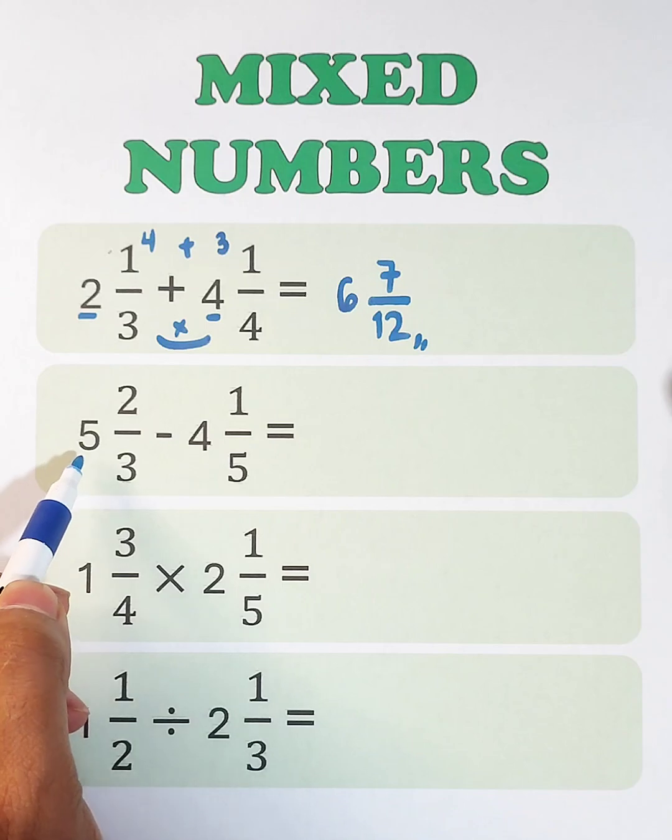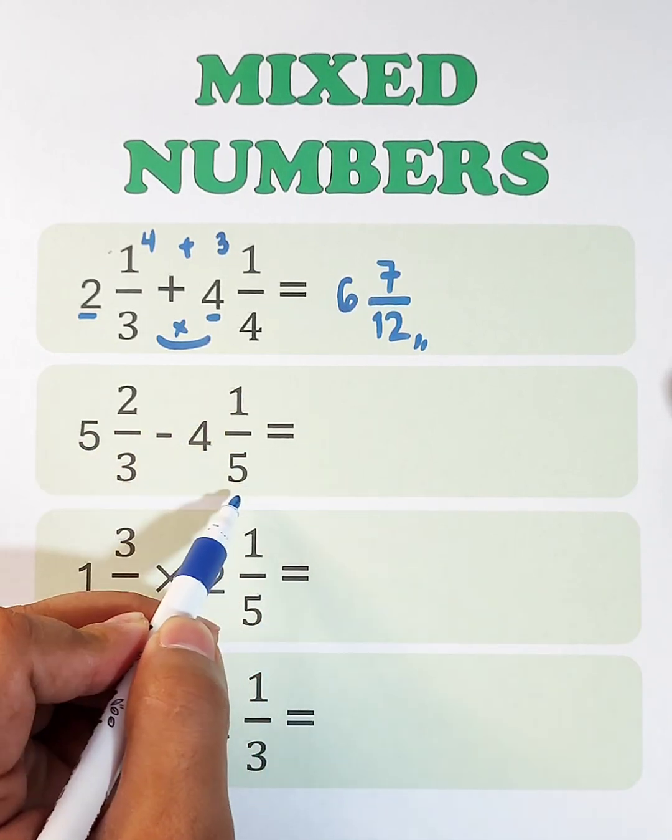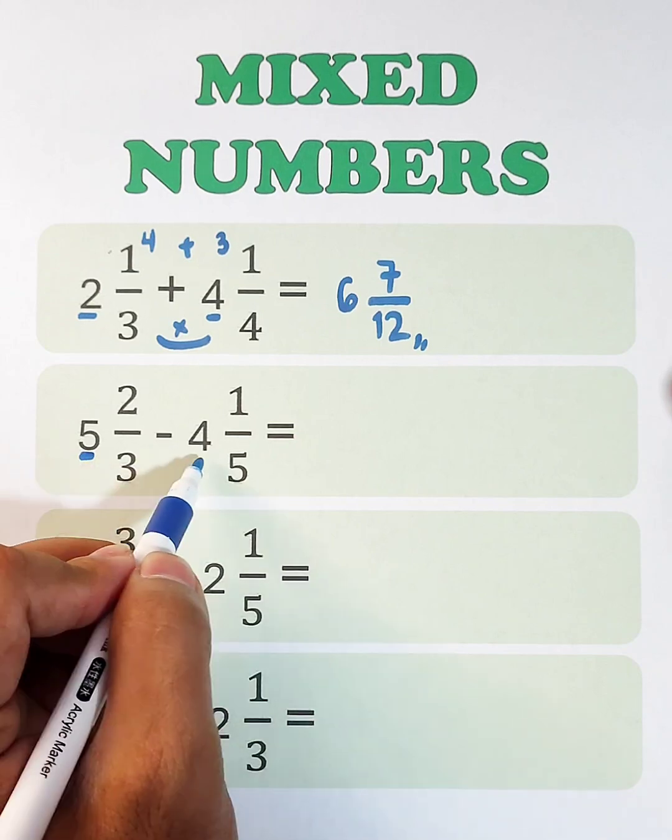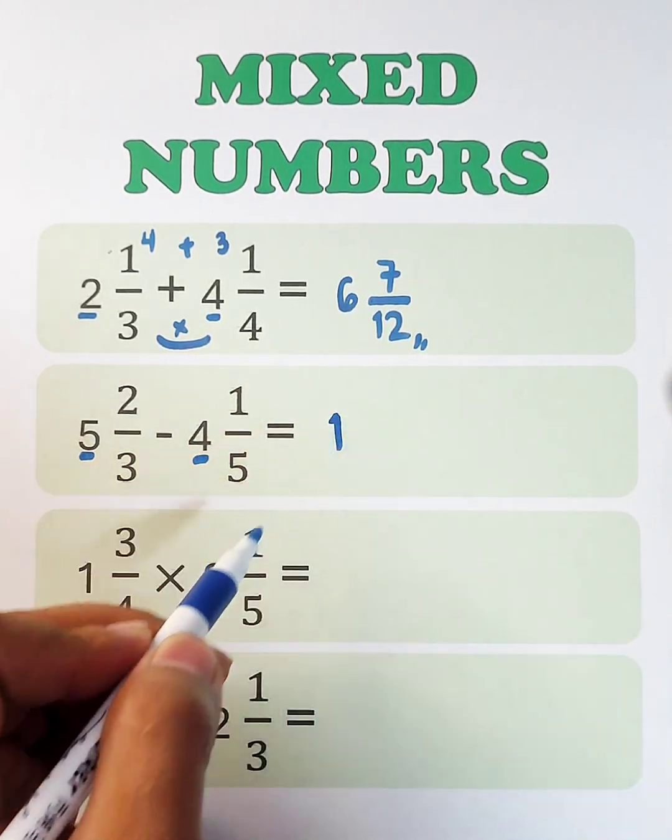Next, let's do subtraction. 5 and 2 thirds minus 4 and 1 fifth. Subtract the whole numbers. 5 minus 4, that would be 1.